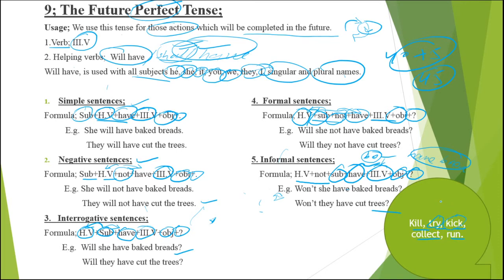Third verb is 'kick.' He kicks the ball. He does not kick the ball. Does he kick the ball? Doesn't he kick the ball? He kicked the ball. He did not kick the ball. Did he kick the ball? Didn't he kick the ball? He will kick the ball. He will not kick the ball. Will he kick the ball? Won't he kick the ball? He is kicking the ball. He is not kicking the ball. Is he kicking the ball? Isn't he kicking the ball? He was kicking the ball. Was he kicking the ball? Wasn't he kicking the ball? He will be kicking the ball. Will he be kicking the ball? Won't he be kicking the ball? He has kicked the ball. Has he kicked the ball? Hasn't he kicked the ball? He had kicked the ball. Had he kicked the ball? Hadn't he kicked the ball? He will have kicked the ball. Will he have kicked the ball? Will he not have kicked the ball? Won't he have kicked the ball?